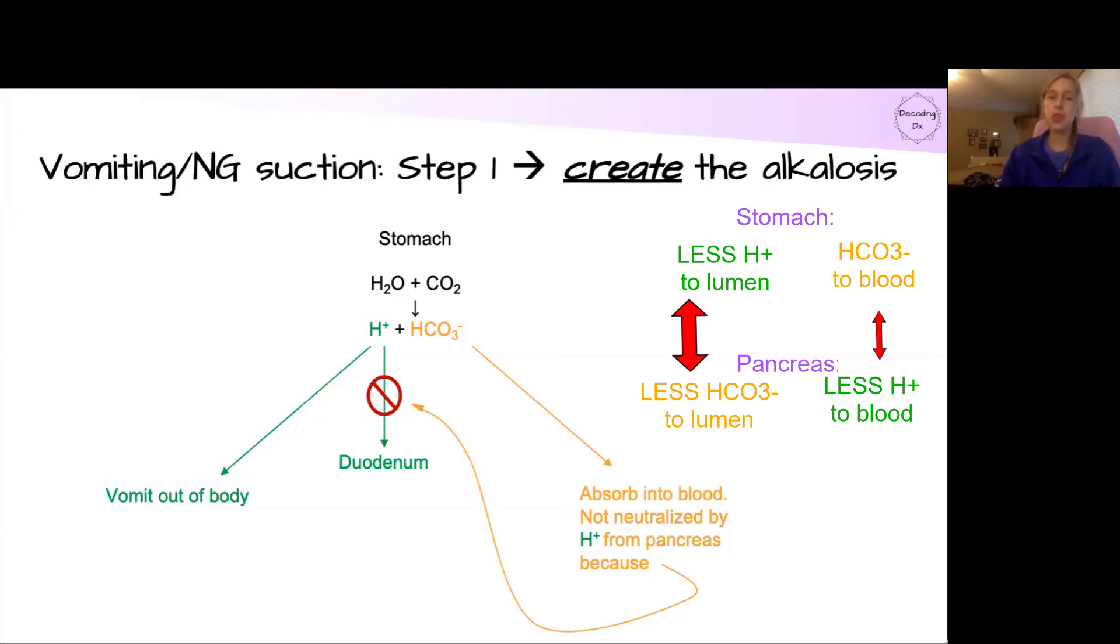But, the free bicarbonate is still absorbed into the blood and it's not neutralized by the reciprocal free hydrogen from the pancreas because the duodenum is telling the pancreas that, hey, there's less acid coming through. We don't need to make as much.